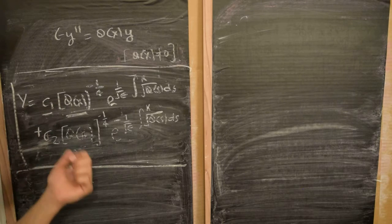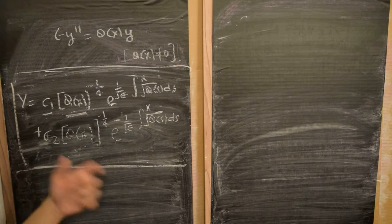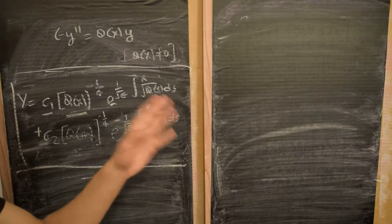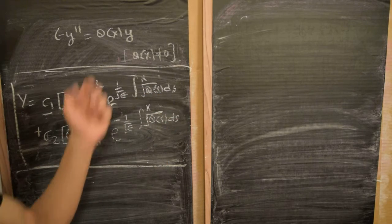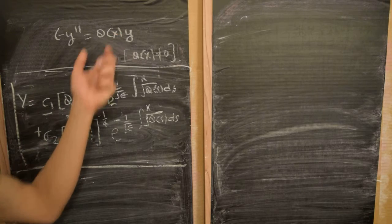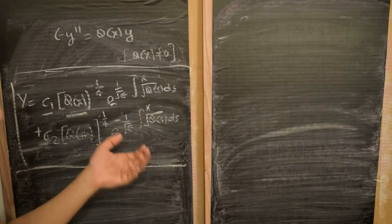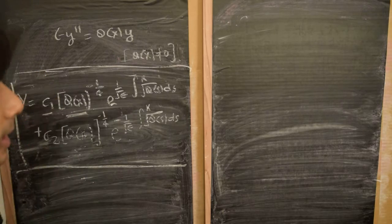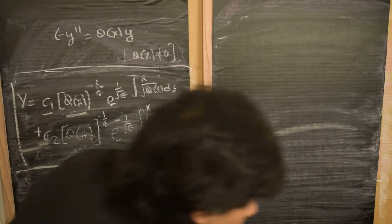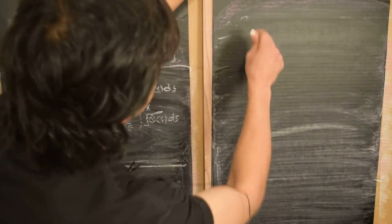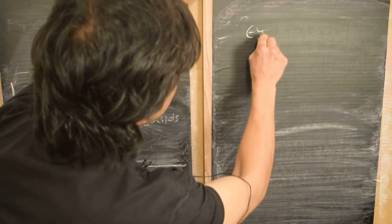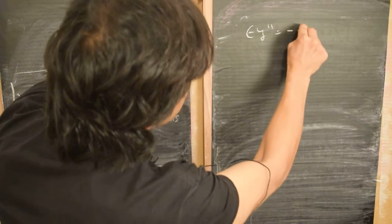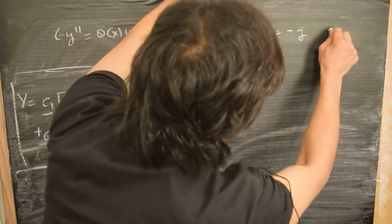So far, we haven't specified the boundary conditions, so these constants are as yet undetermined. Let's look at a specific simple example of this equation and compare our WKB solution to the exact solution we can obtain in that case. The specific example is: ε y'' = −y.